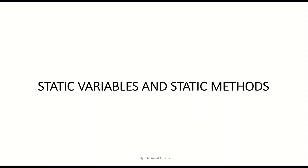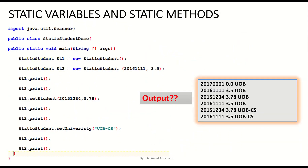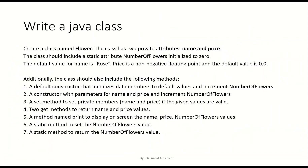We'll continue with static variables and static methods. We did some output questions in the previous session, and now we will try to write a Java class. The question says you have to create a class named Flower. The class should have two private members: name and price. The static variable numberOfFlowers should be initialized to zero. The default value for name is rose, the price should be non-negative floating point, and the default is zero.